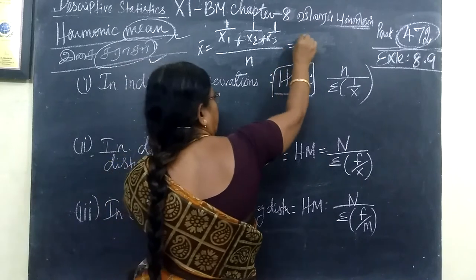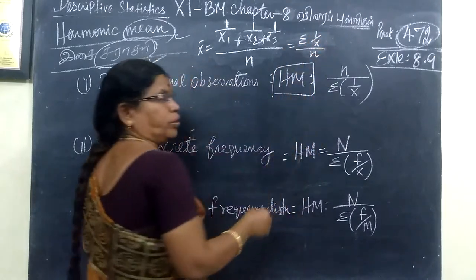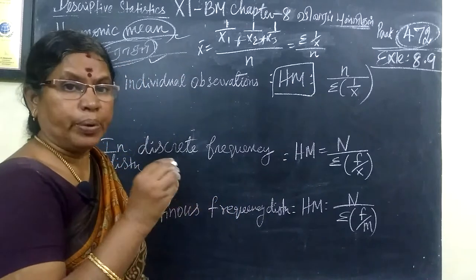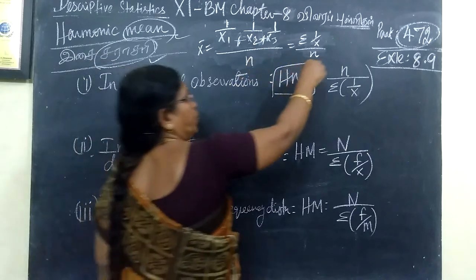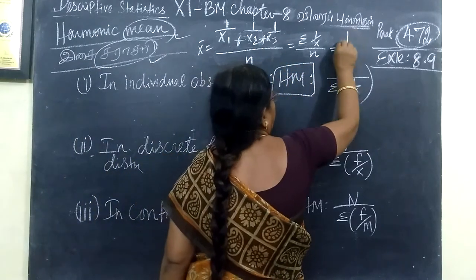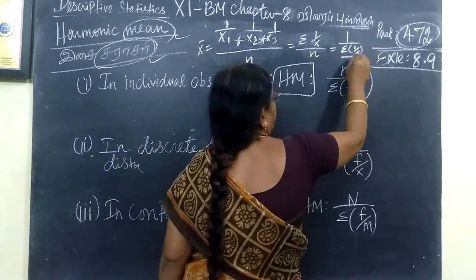So what do we do? Sigma 1 by x divided by n. This is mean. Harmonic mean is the reciprocal: 1 by sigma of 1 by x divided by n. This is n.